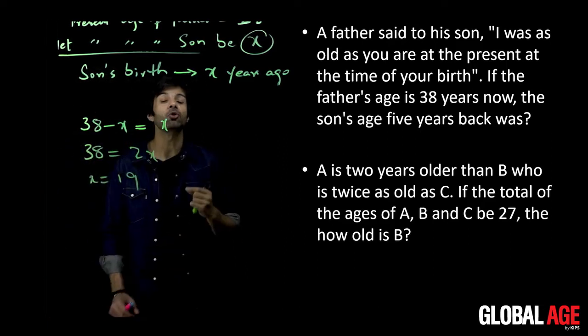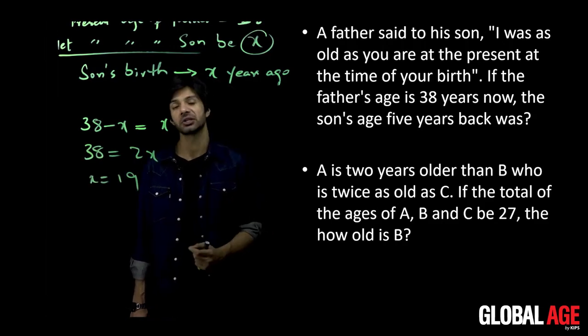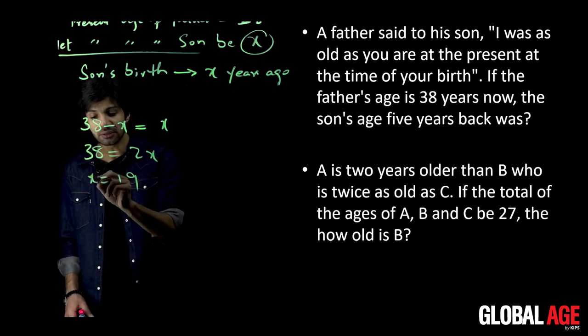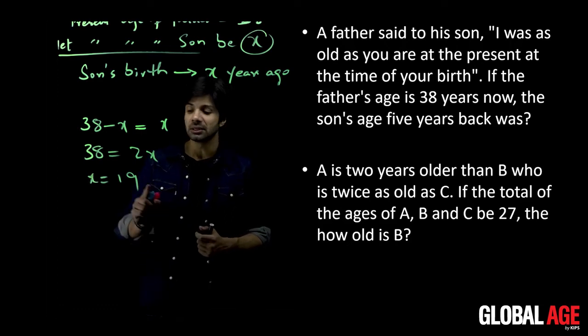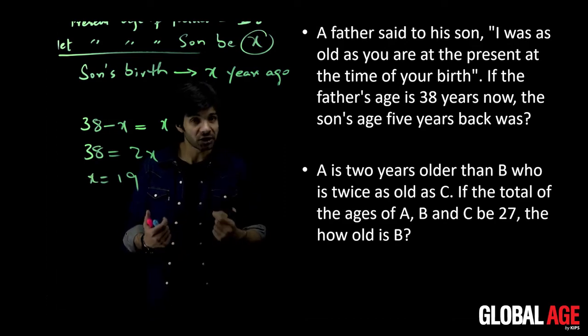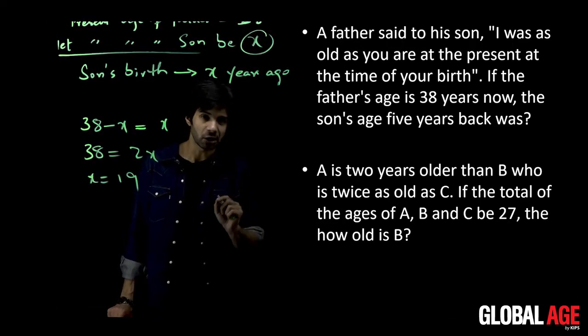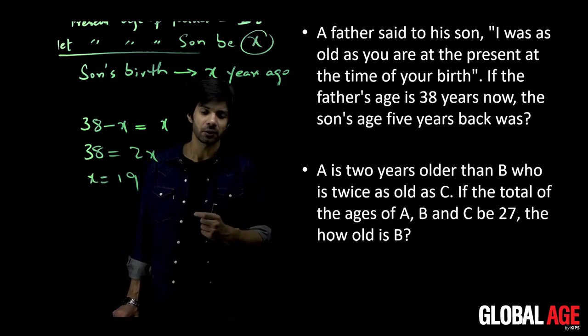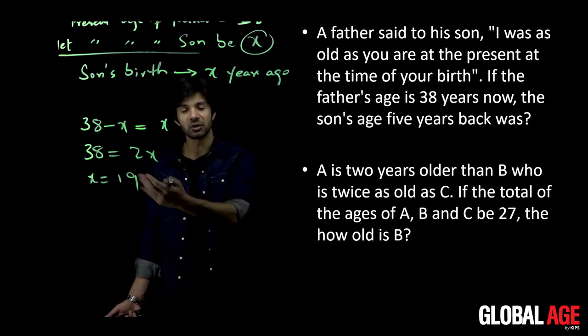This means baby is 19 years old and father's age is 38 years old. Let's verify that we have not been wrong. Baby is 19 years old. This means that 19 years ago, when the baby was born, the father was 38 minus 19, so the father was 19 years old. So the father was the age of the child currently.